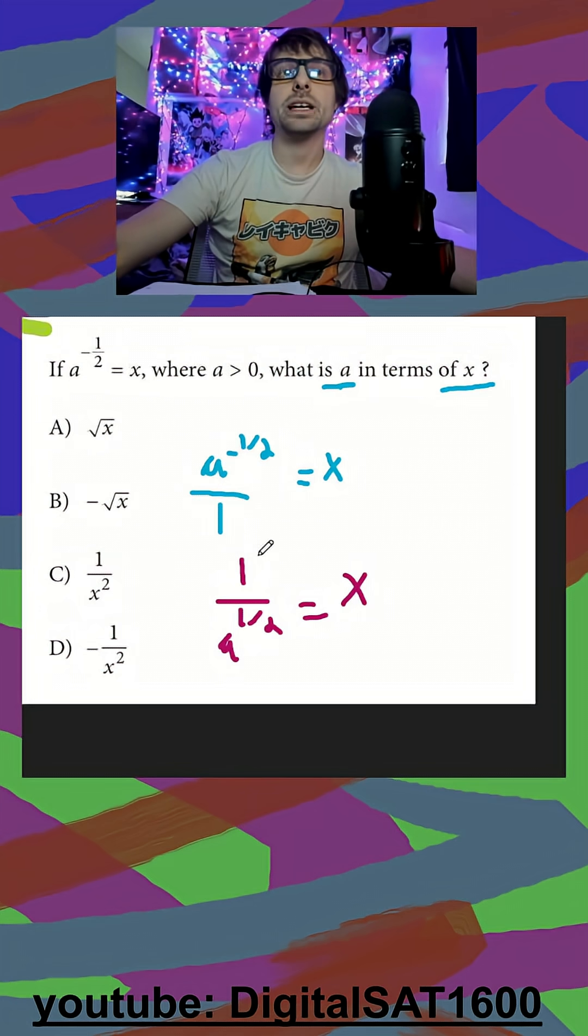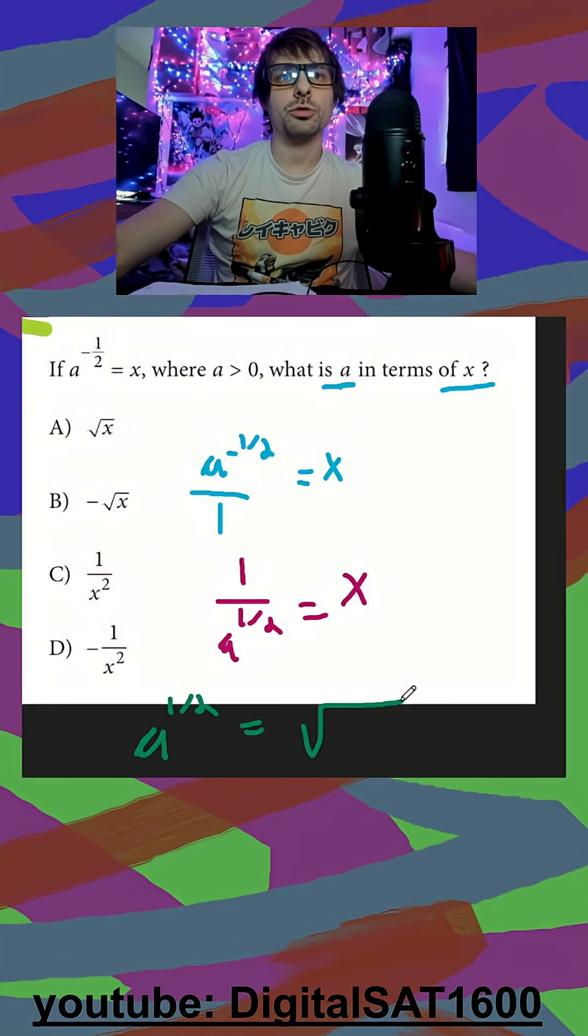And then we also want to remember between exponent form and radical form. So if I do this off to the side, a to the one-half into radical form. Remember that your numerator stays your numerator. So it's going to be a to the one. And then your denominator is the number that goes in the radical.